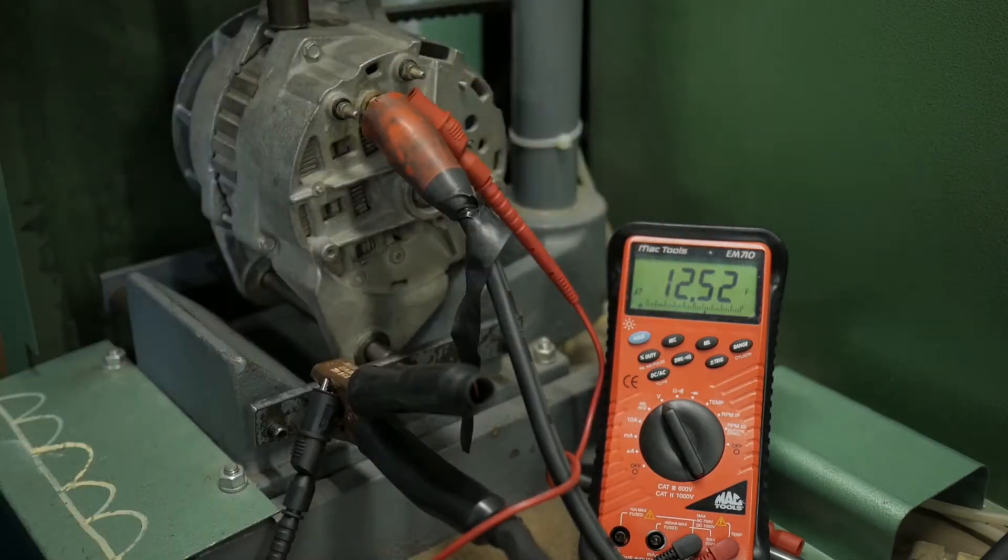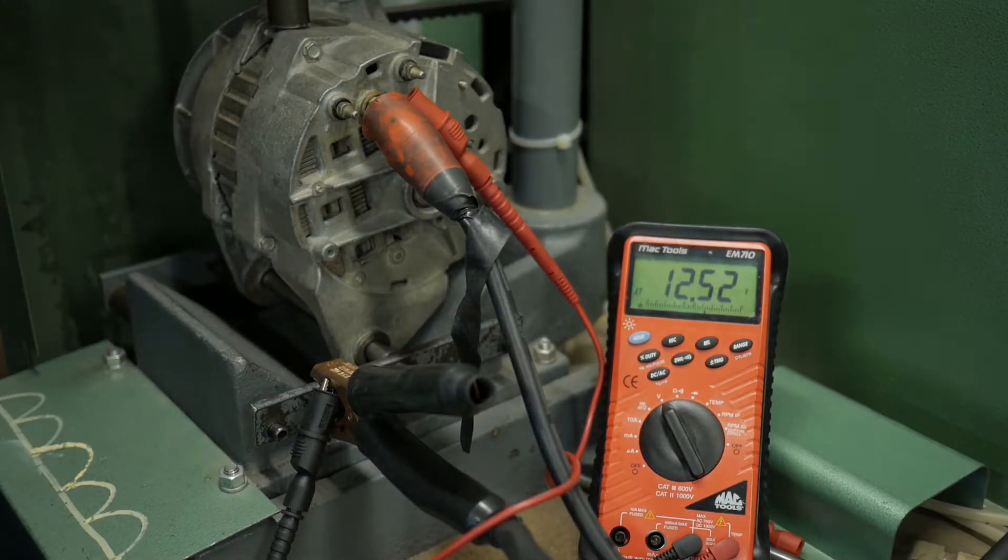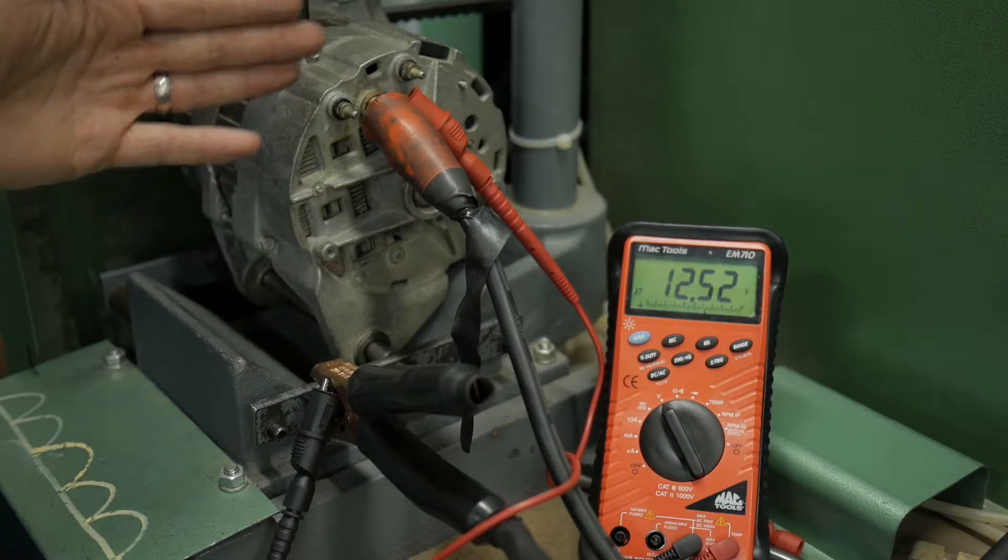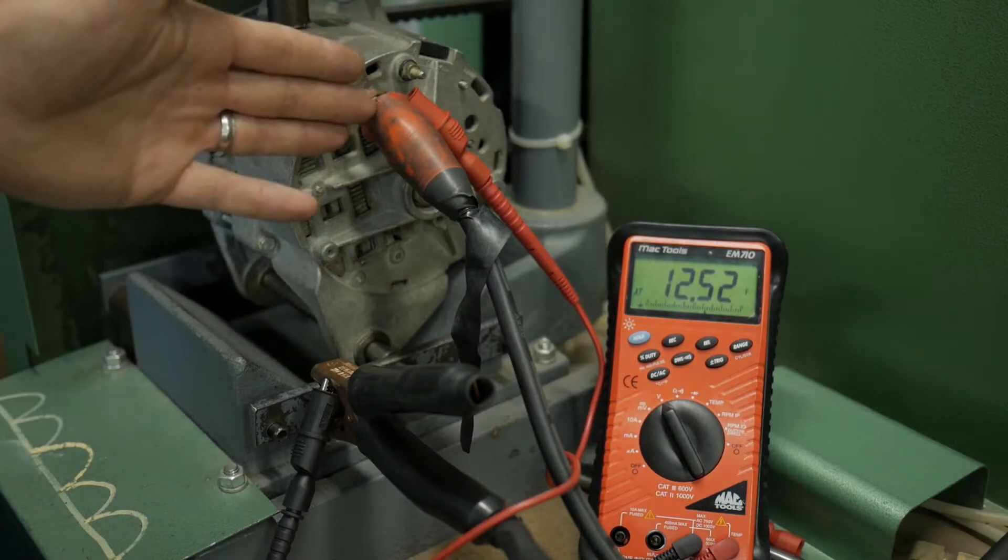What we're going to do is turn on the drive motor, which will rotate the rotor inside the alternator, and we'll see if we get an output voltage from the alternator itself.